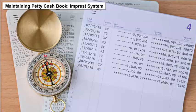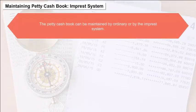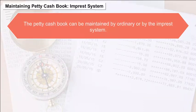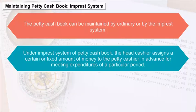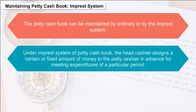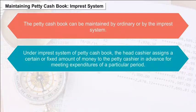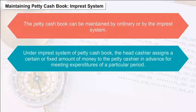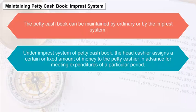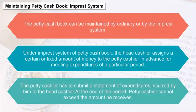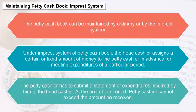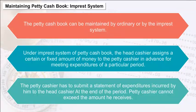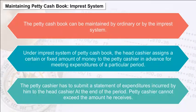Maintaining Petty Cash Book — Imprest System: The petty cash book can be maintained by the ordinary or imprest system. Under the imprest system, the head cashier assigns a fixed amount of money to the petty cashier in advance for meeting expenditures of a particular period. The petty cashier submits a statement of expenditures incurred to the head cashier at the end of the period. The petty cashier cannot exceed the amount he receives.